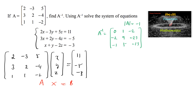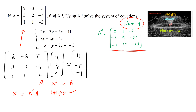The solution is given by X = A inverse times B, provided the determinant is not equal to 0. Here the determinant equals -1, which is not zero, so the condition is satisfied. Since A inverse has already been found, we can directly write X = A inverse times B, where A inverse is [0, 1, -2; -2, 9, -23; -1, 5, -13].